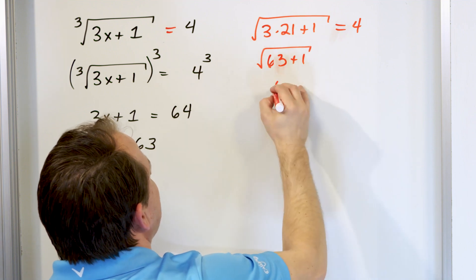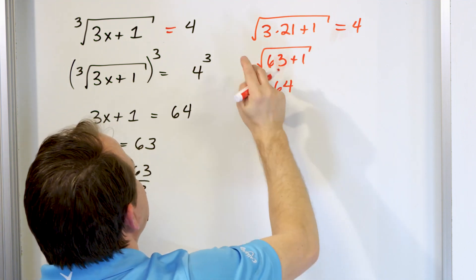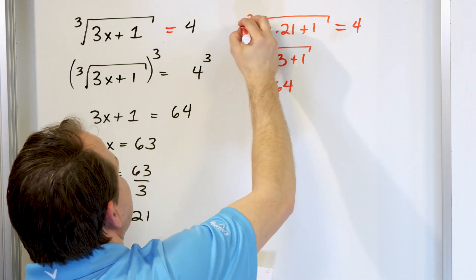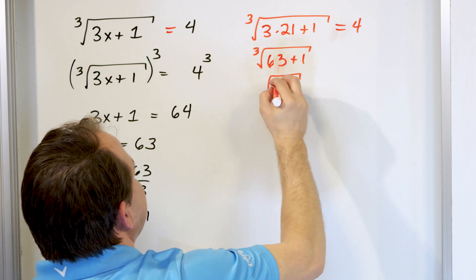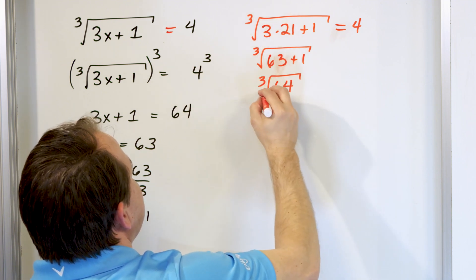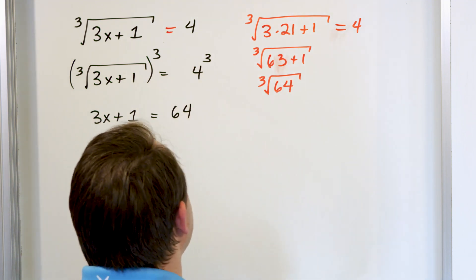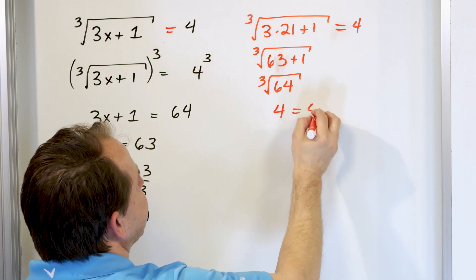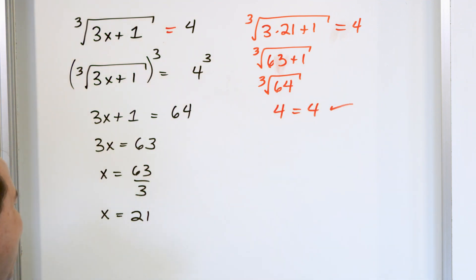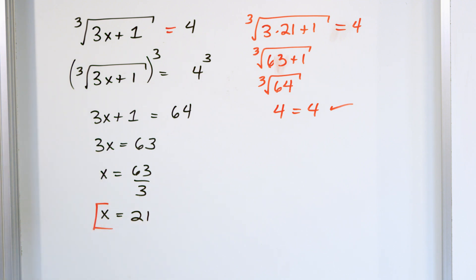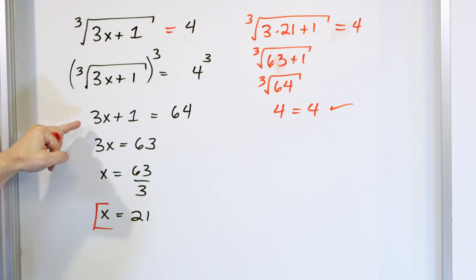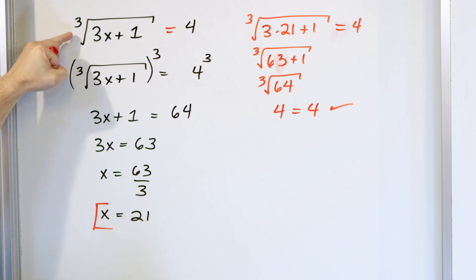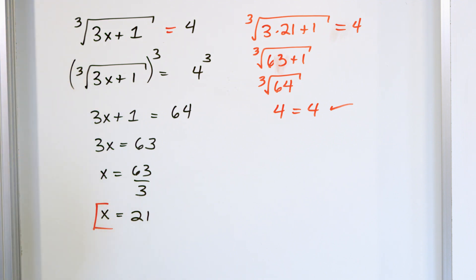63 plus 1 is 64. And of course these are cube roots everywhere. The cube root of 64 is going to be 4, because 4 times 4 times 4 is 64. So we find that 4 is equal to 4 — that's the good check. So the answer is 21, that's the correct answer. We plug it back in — not into any of the intermediates, but into the original equation to see if it's valid.